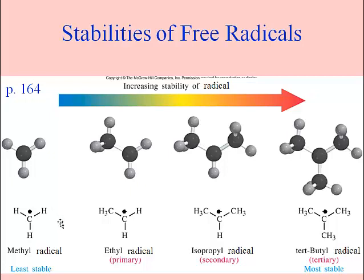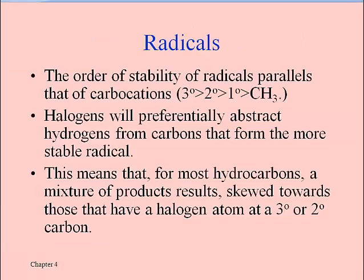So if we have an alkane that has a mixture of carbons that are tertiary, secondary, or primary, then that's going to lead to different products. We're going to find that there's a favoritism for doing the substitution on radicals that are tertiary versus the others. Just like carbocations, we have the same order of stability, which means the tertiary ones form faster.